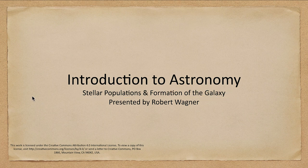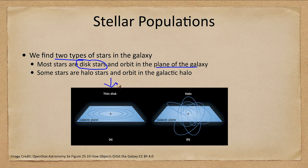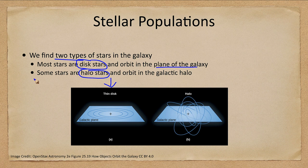So what do we mean by a stellar population? When we look at the stars we find in general two types of stars in the galaxy. Most of the stars are what we call disk stars — these orbit in the plane of the galaxy, in a flat plane almost like our solar system. However, some stars are halo stars and orbit at very unusual, very high angles relative to the galactic plane.